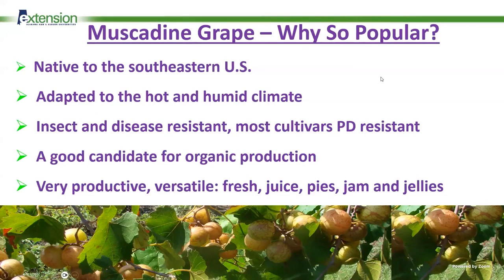Muscadines are a very popular and favorite crop for the population around, and no wonder, because they're native to the southeastern United States and pretty well adapted to the hot and humid climate, unlike many exotic fruit crops. They have resistance not only to different insects but different diseases, and most muscadine cultivars are resistant to Pierce's disease. They're also a very good candidate for organic production — probably the best candidate on the fruit crop side in our states.